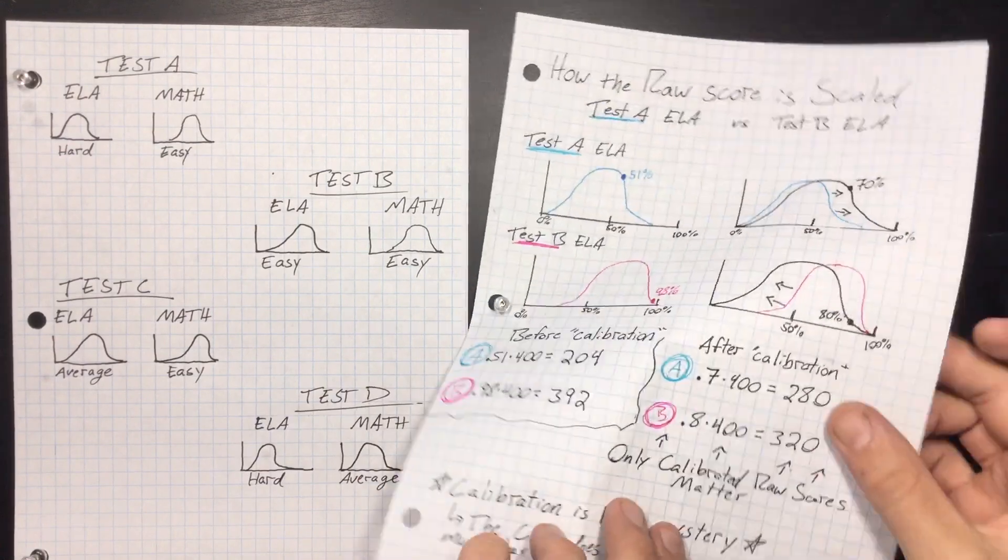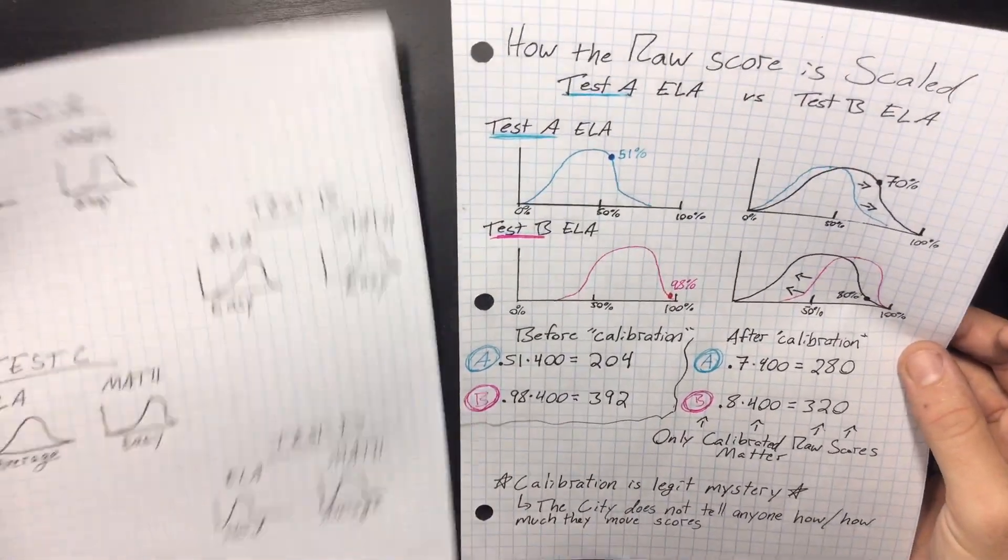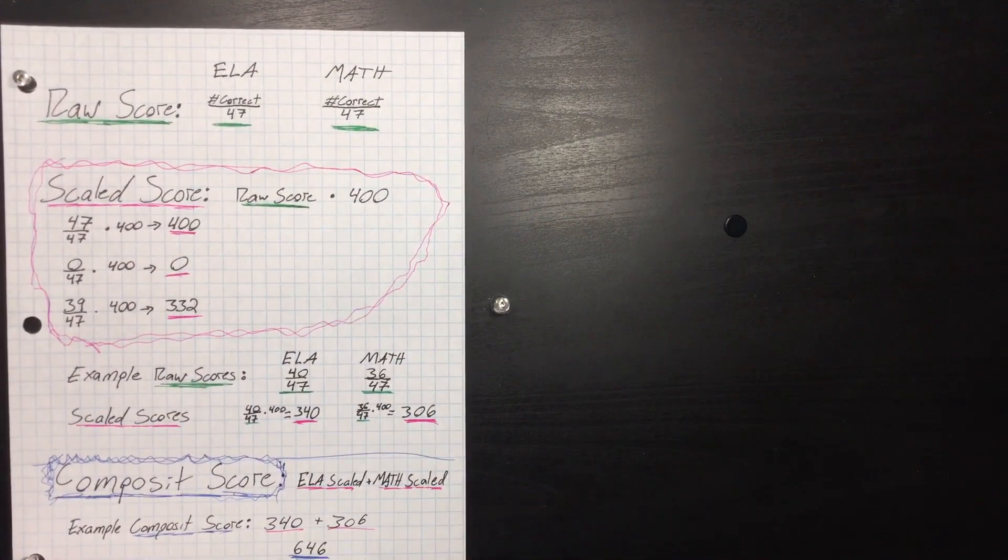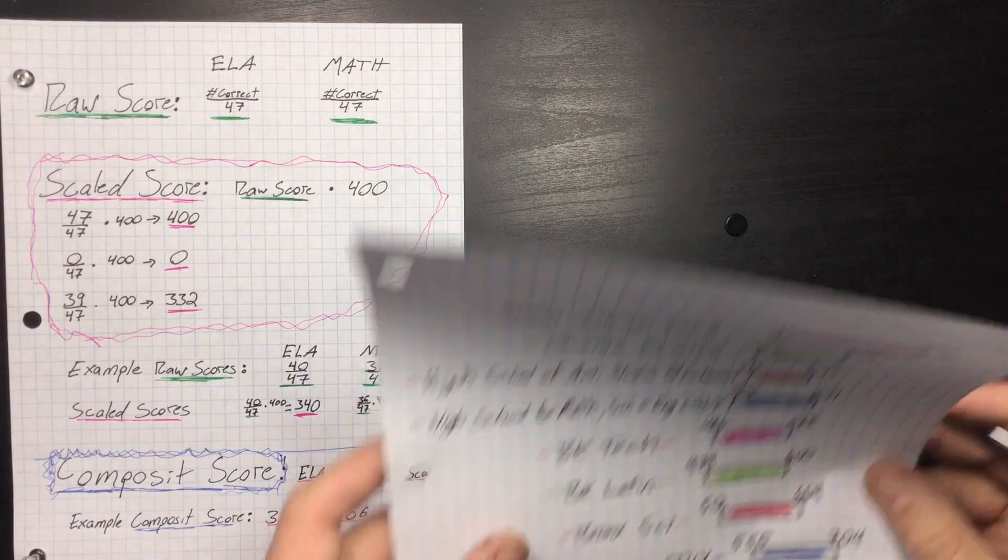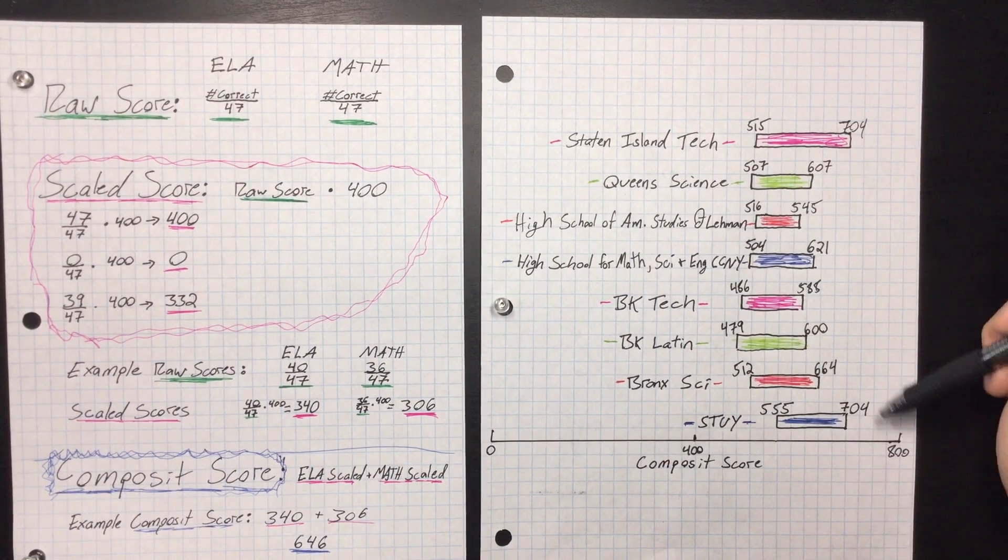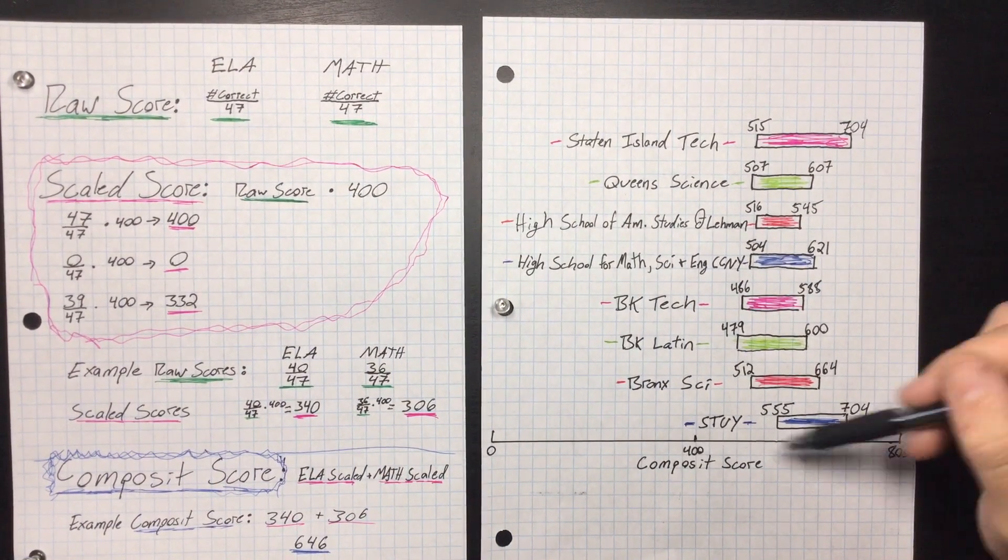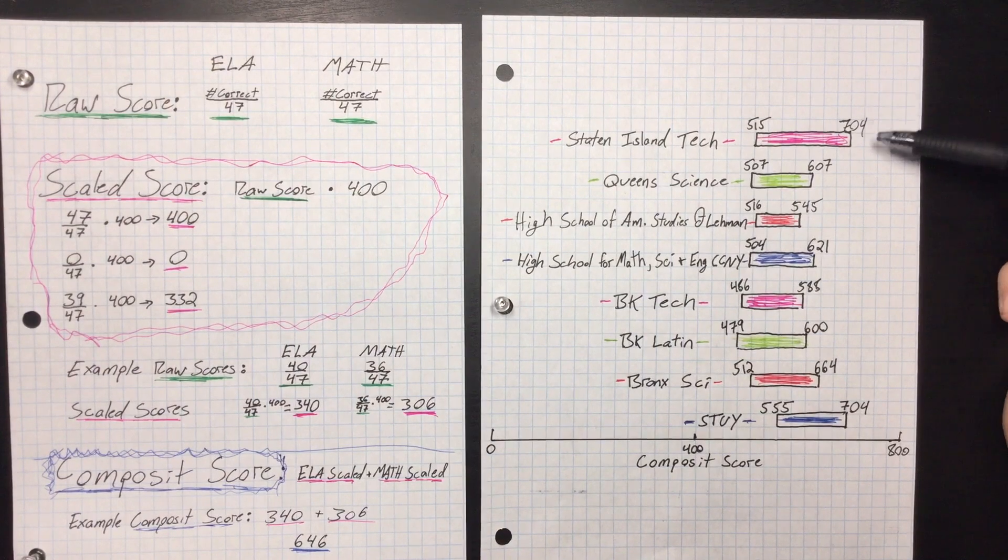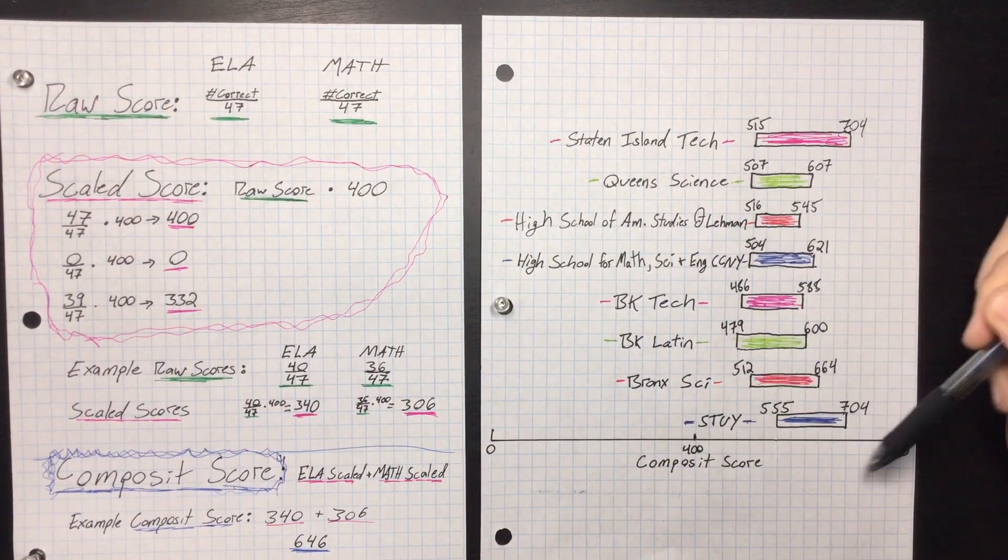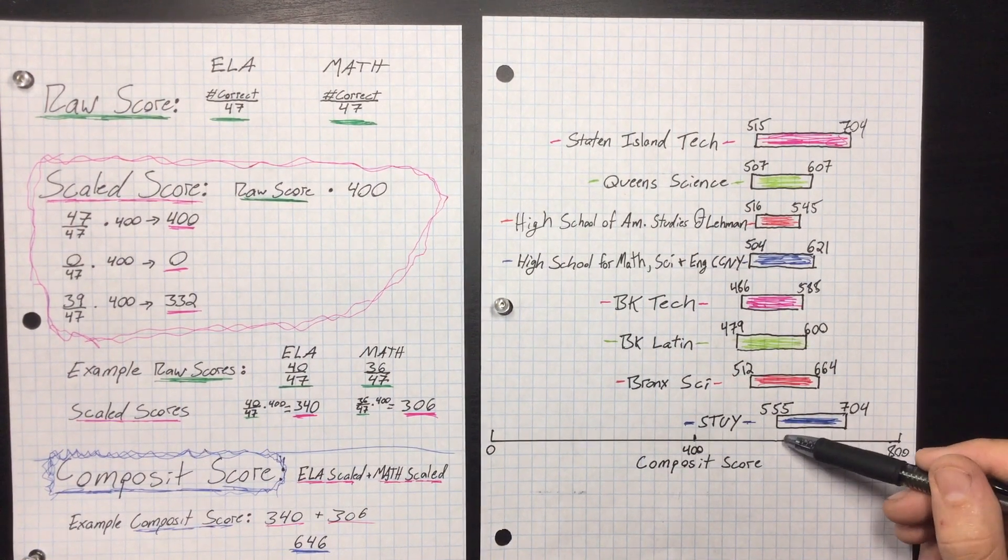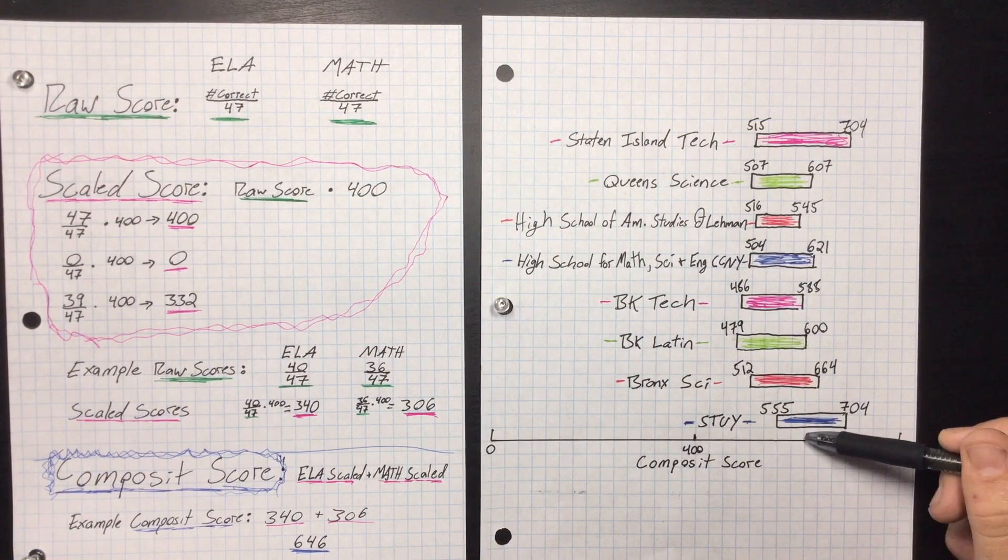Once you put your calibrated scaled scores together and you add them to equal your composite score, then that's what the specialized high schools look for. Here are - I mean, these aren't 100% confirmed - the schools themselves do not say what their cutoff scores are, and every year it's different. But here is a good approximation about what the schools are looking for based on last year's acceptance rates.